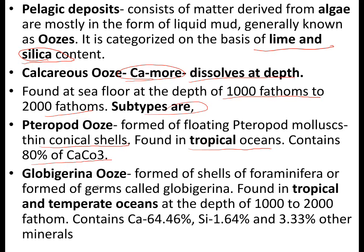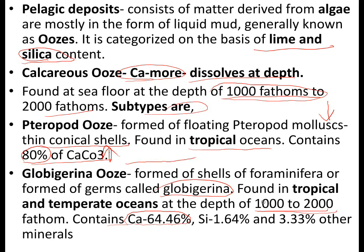Pteropod ooze contains 80% calcium carbonate. Globigerina ooze is formed of shells of foraminifera called globigerina, found in tropical and temperate oceans at depths of 1,000 to 2,000 fathoms. Calcareous ooze is found between 1,000 to 10,000 fathoms, but tends to dissolve in water at greater depths. Globigerina ooze contains 64.46% calcium, 1.64% silica, and 3.3% other minerals — calcium decreasing with depth as it dissolves.